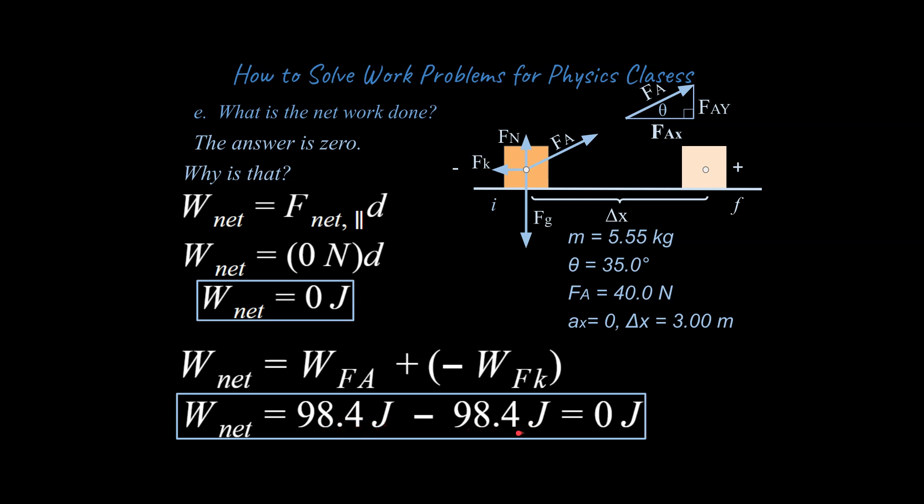The work done by the kinetic friction force is negative 98.4 joules. This is the first lesson in an energy unit we're going to be doing together. If you have any questions or comments, please let me know down below. I hope this is helpful and have a great day. Take care.